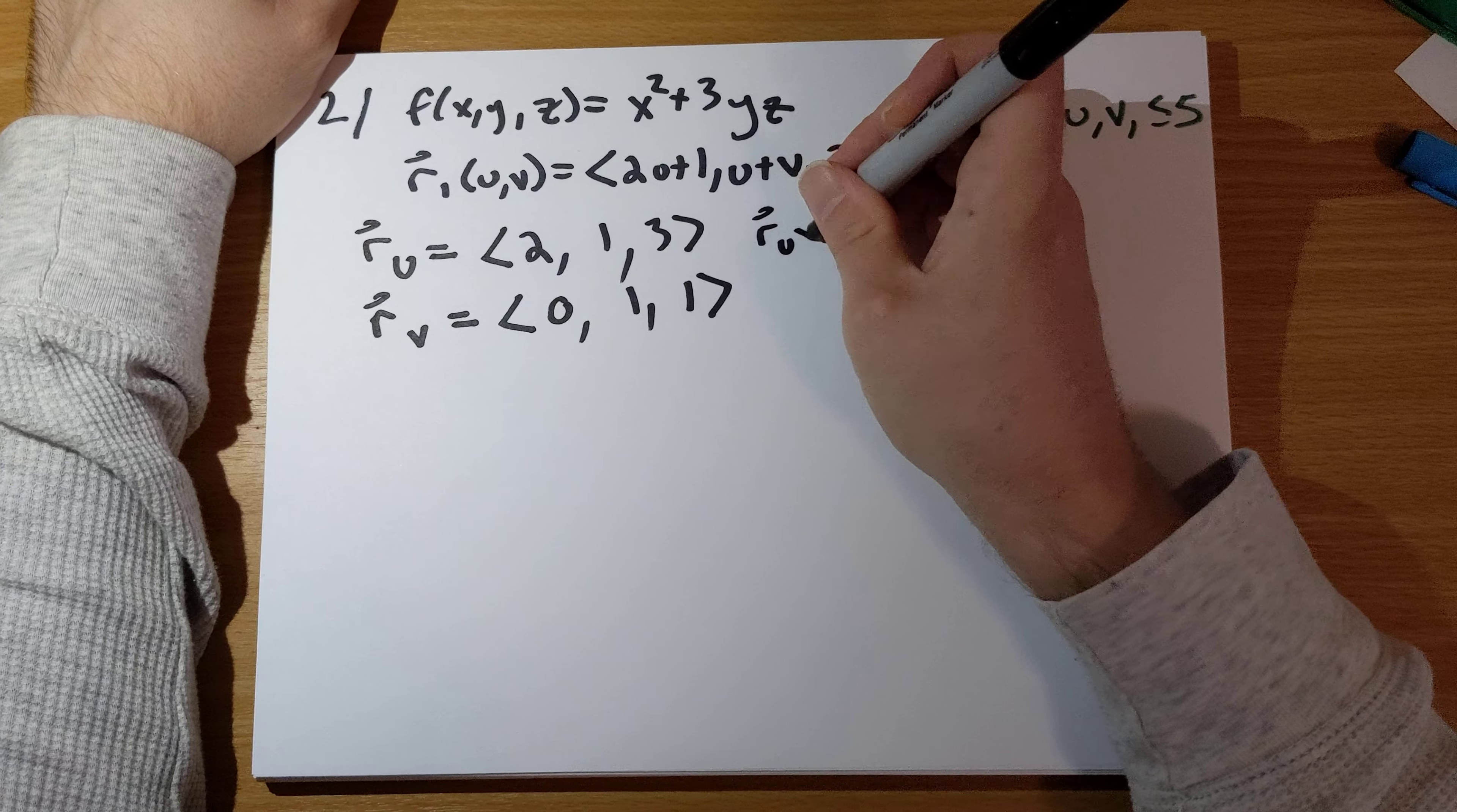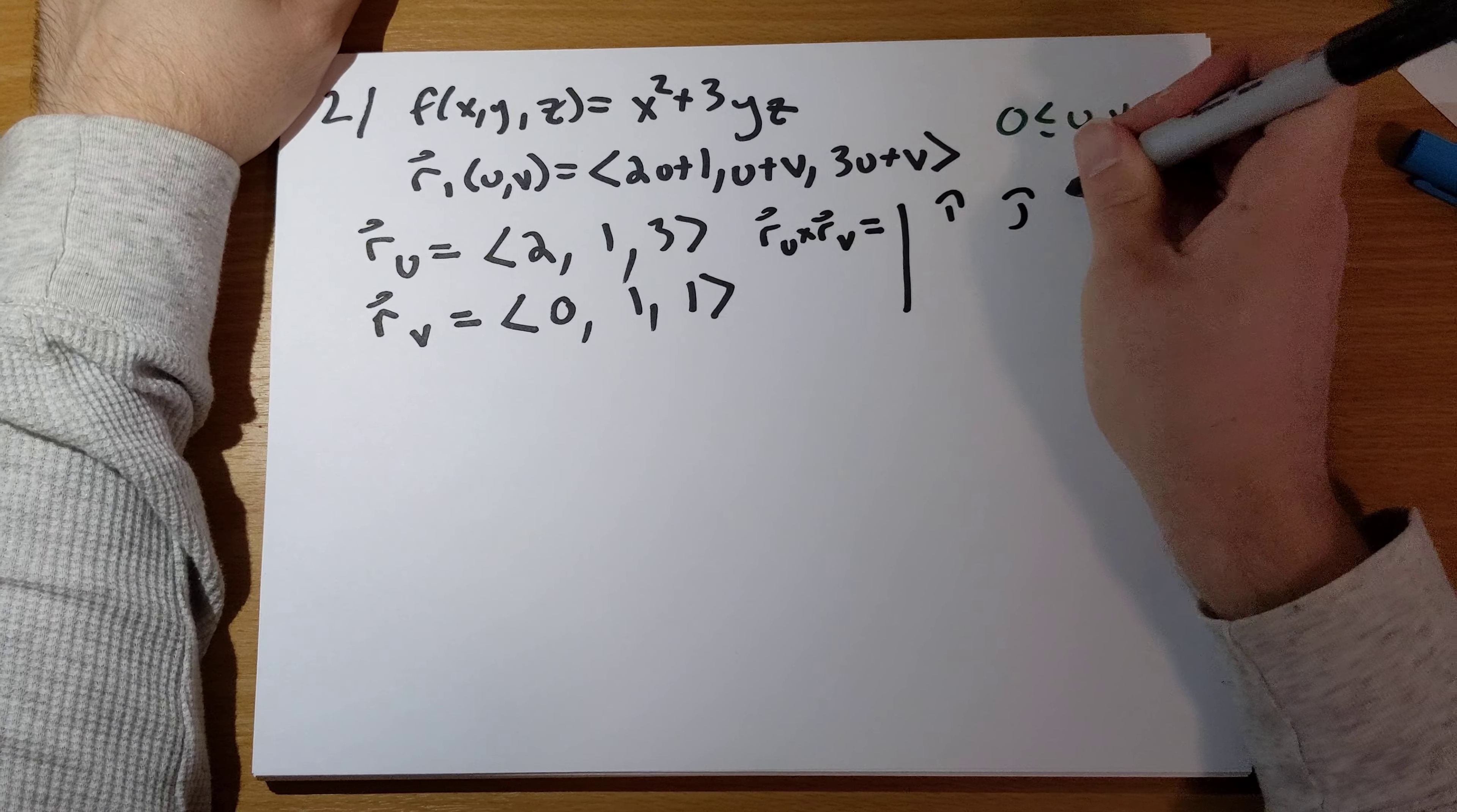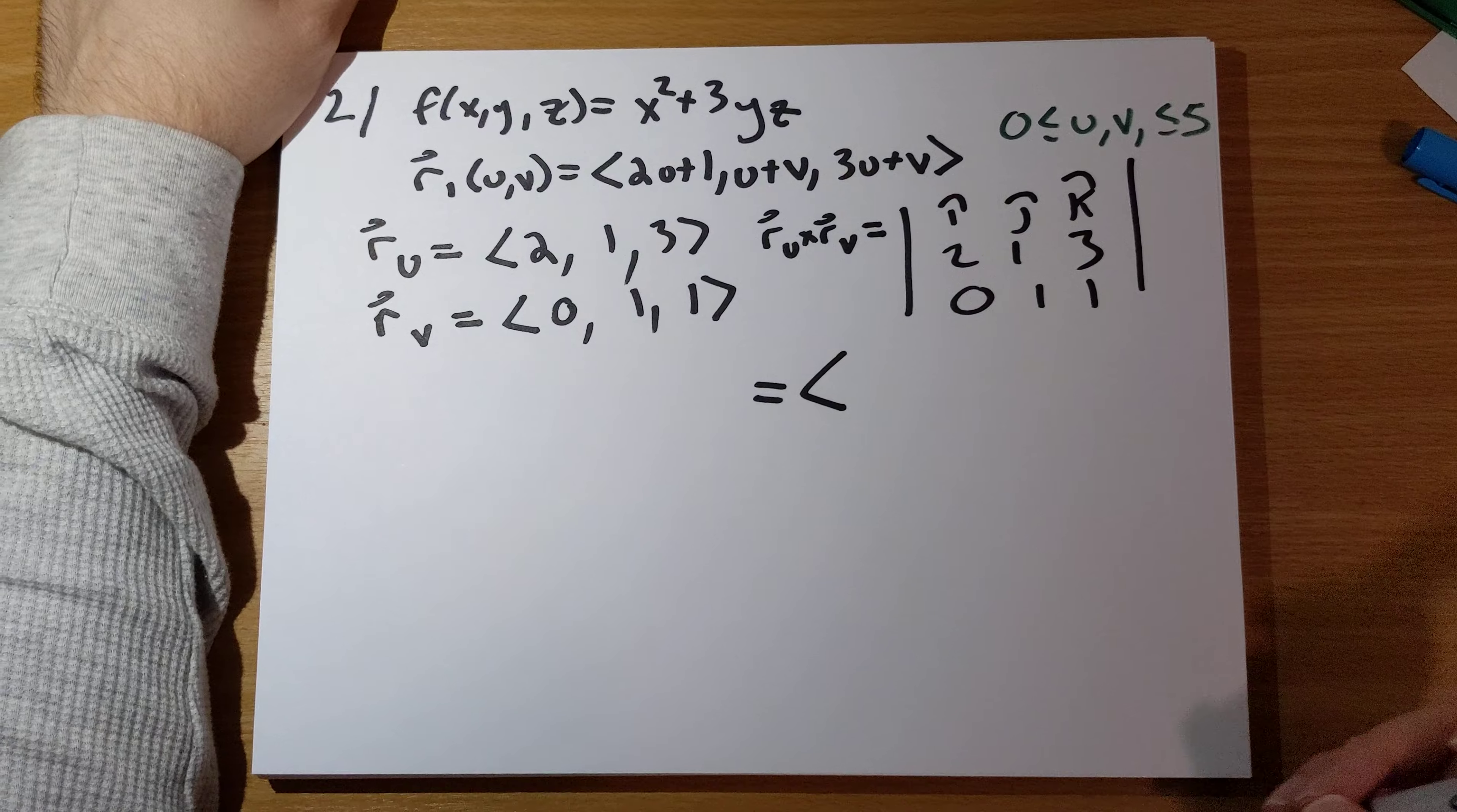And then, our cross product is going to equal this 3 by 3 determinant. Everything is nice here. It's just constants.